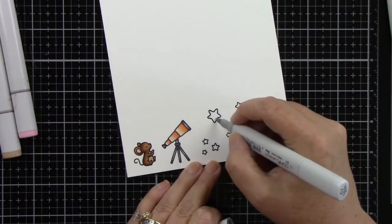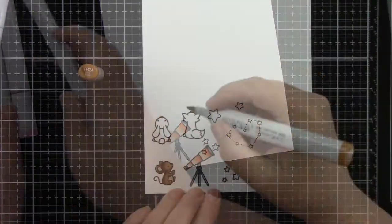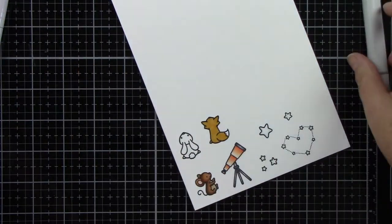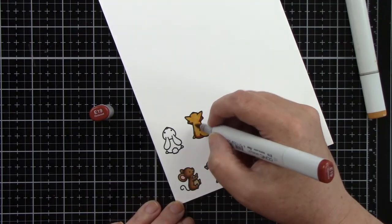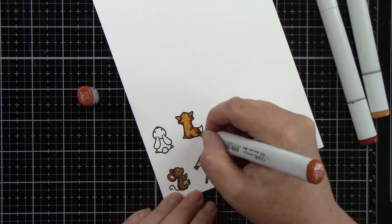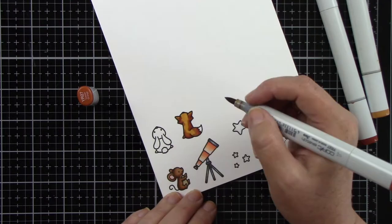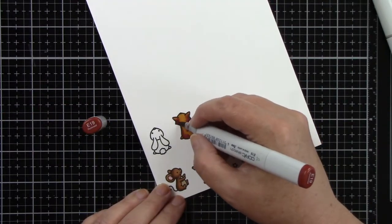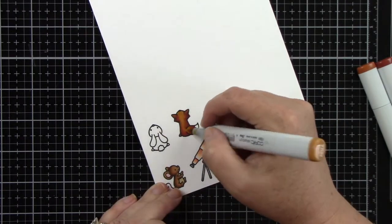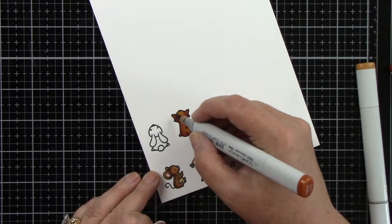I also forgot to stamp a couple of my images so I'm going to stamp the cute little bunny and the little fox from Upon a Star because they are going to be watching the stars as well. For that little fox, I am using YR24, 27, and E19. And then that little bunny is going to be W3, 5, and 7.